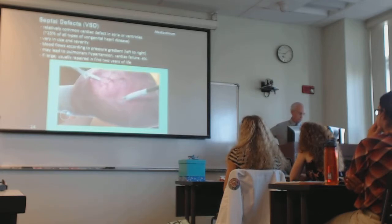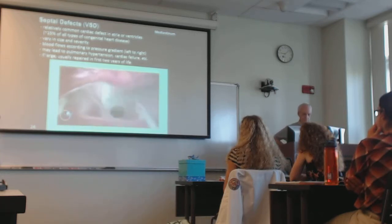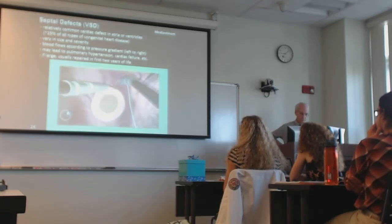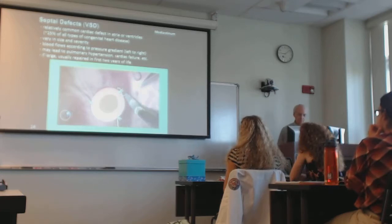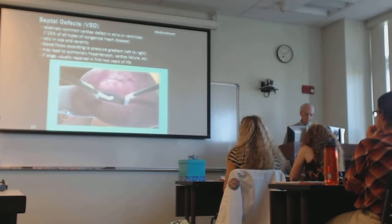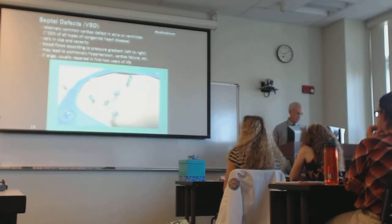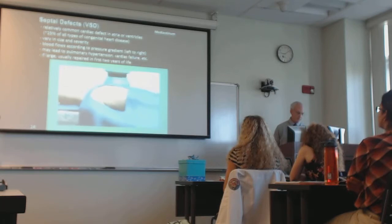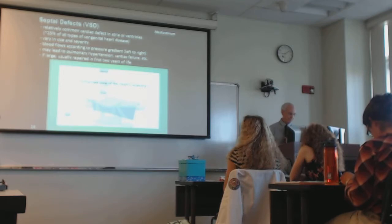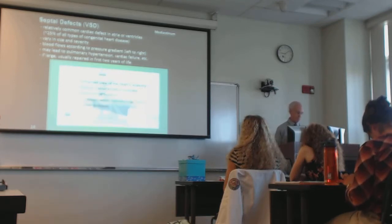Once the heart is stopped, the surgeon creates an opening in the atrium to access the defect. Using the third instrument arm, the surgeon lifts the roof of the atrium, exposing the hole, and repairs it using a patch — similar to patching a bicycle tube. Once the repair is tested, the atrium is closed and the heart restarted. The surgeon undocks the robot, closes incisions, and takes the patient off bypass. Robotic repair provides enhanced view and precise repairs, with potential for faster recovery and less pain.